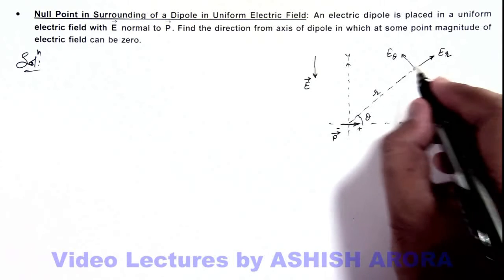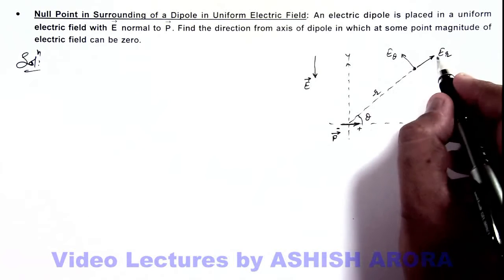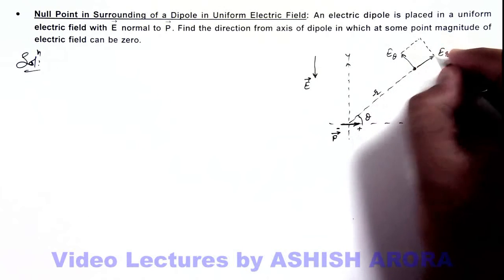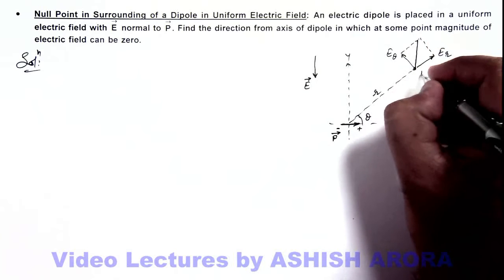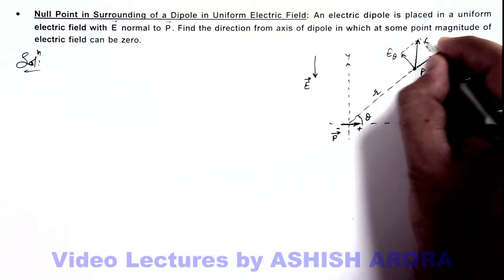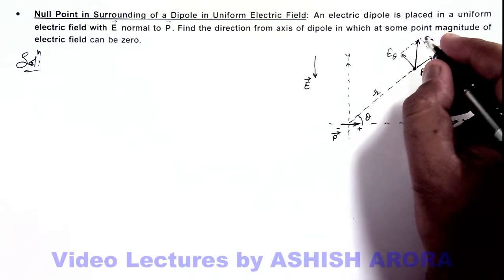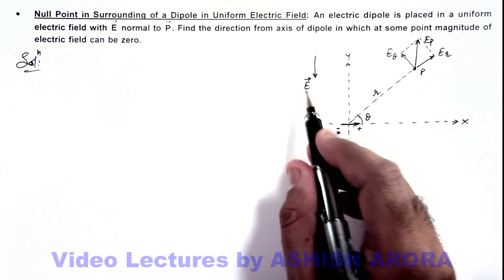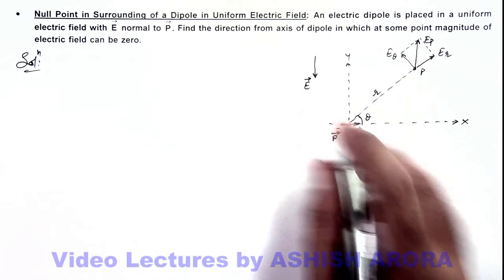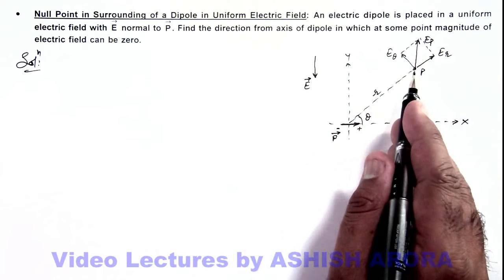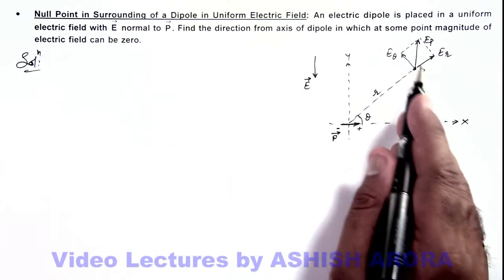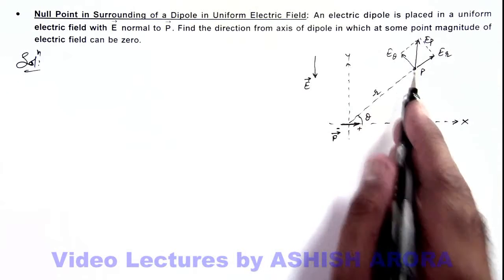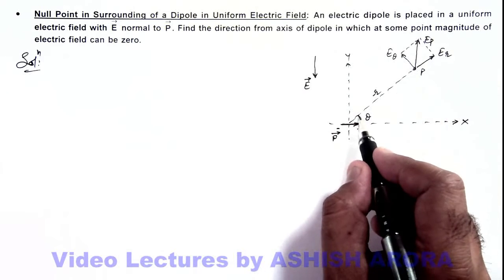Now, due to the resultant of these two components of electric field, it is possible that the net electric field at point P due to the dipole, E-P, is in the vertically upward direction. In that case, if this E-P balances the external electric field, then at point P the net electric field will be zero — it is a null point. We are required to find the value of theta.